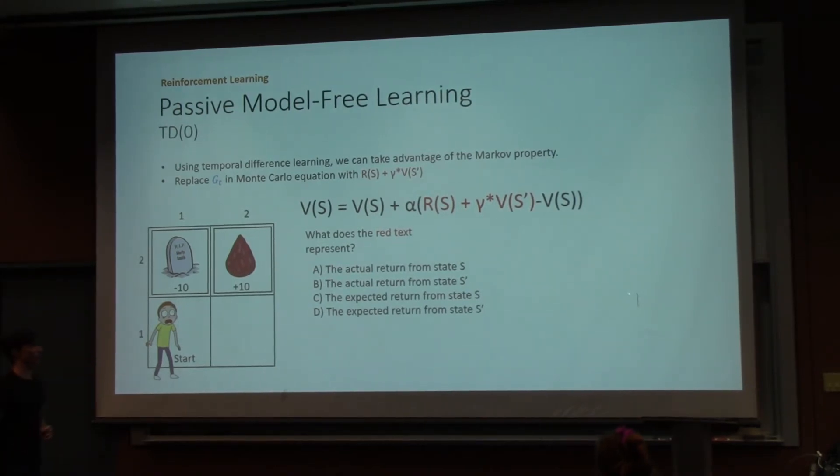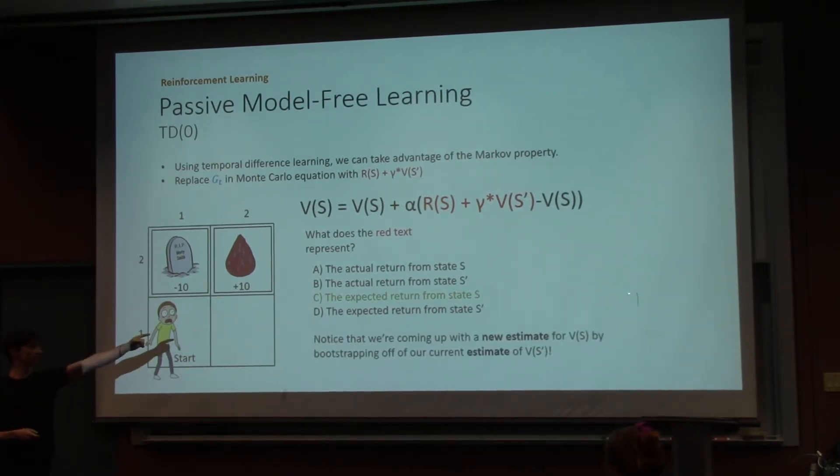All right, who thinks the red text represents the actual return from the state S? How about the actual return from the state S prime? The expected return from the state S? If not, all right, we have to set a few hands. If the rest of the class doesn't raise their hand for D, I'm going to be very upset. How about D, the expected return from state S prime? See, everybody raised their hands because you didn't want to upset me, but it turns out the actual answer is C, the expected return from state S.